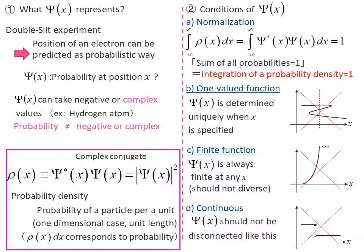Now let's consider the properties of the wave function Ψ(x). We derived the Schrödinger equation in the previous video. But then, what does the solution Ψ(x) represent?